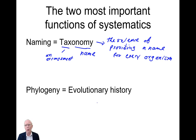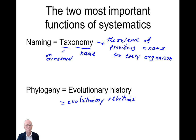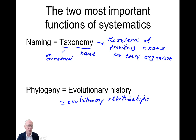The second really important function of systematics is uncovering the evolutionary relationships — the evolutionary history of organisms. We'll talk a good deal this semester about the history of how we have thought about evolutionary relationships, what we've done in the past and what we're doing now.